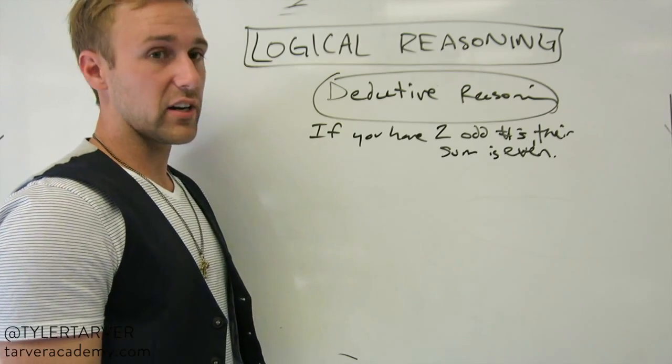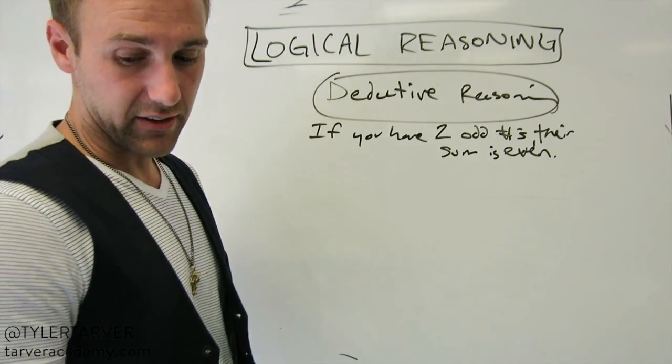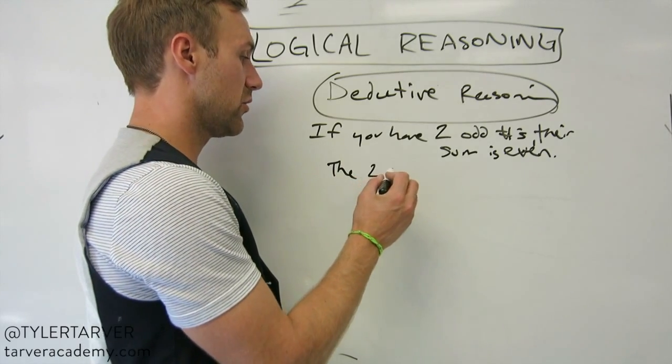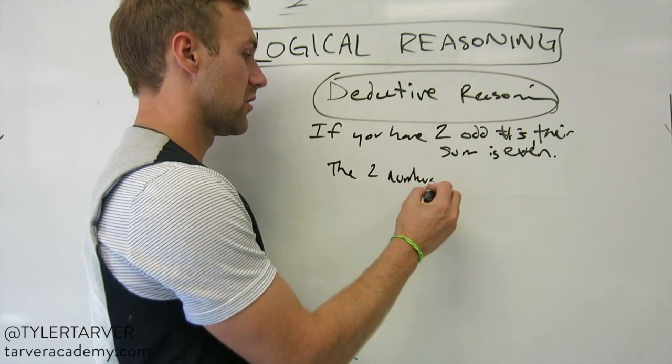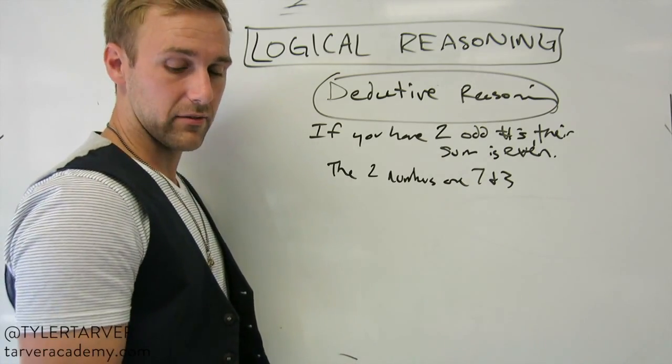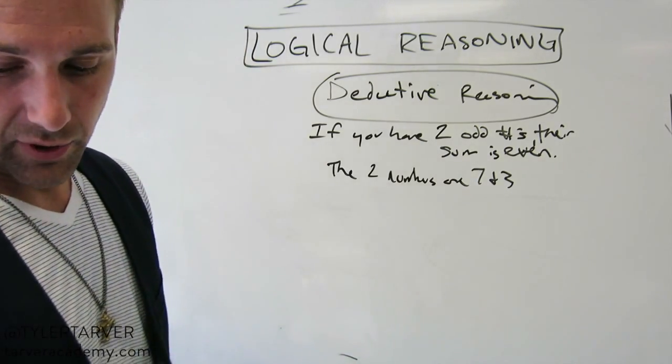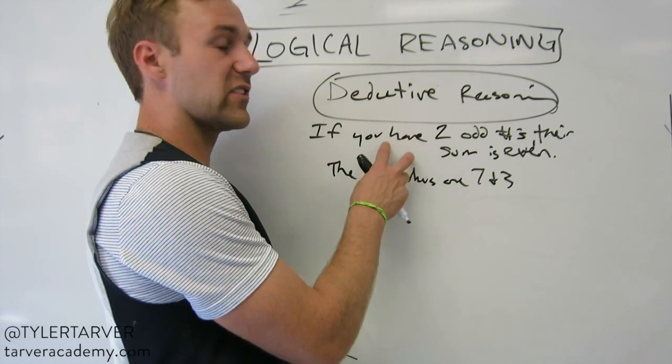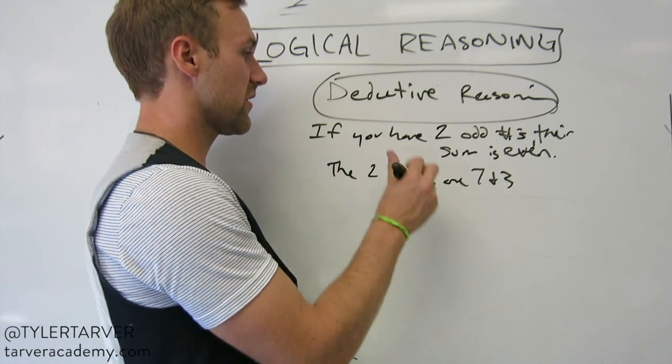We're using deductive reasoning. Let's say that it is if you have two odd numbers, their sum is even. Okay? All right. So my hypothesis is you have two odd numbers, and the conclusion is the sum is even. Okay? So in deductive reasoning, essentially I would take an answer saying the two numbers are seven and three. Are those both odd numbers? Yeah. Okay. Well, good. Well, then I would put it together and see if it is correct. So I take this and I figure out if this is true.